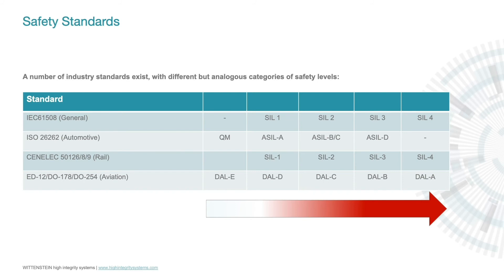ISO 26262 covers automotive applications. CENELEC 50126, 50128, and 50129 are for railways. ED-12, DO-178, DO-254, and a bunch of SAE standards are for aviation, and so on. They all have some broadly analogous notion of safety integrity levels, although the names differ and they're not directly comparable, ranging from lowest risk on the left of this chart through to the highest risk on the right.